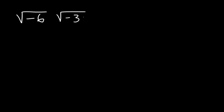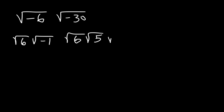Try this one: what is the square root of negative 6 times the square root of negative 30? The square root of negative 6 is the square root of 6 times the square root of negative 1. The square root of negative 30 is root 6 times root 5 times negative 1. So we have 6 times 5 times negative 1, which is negative 30.